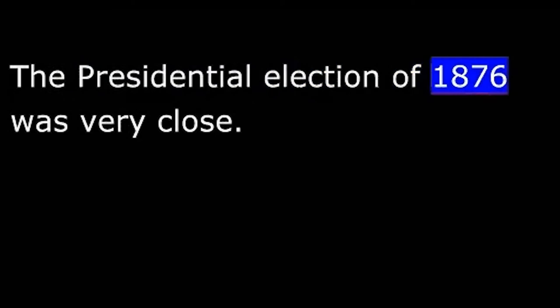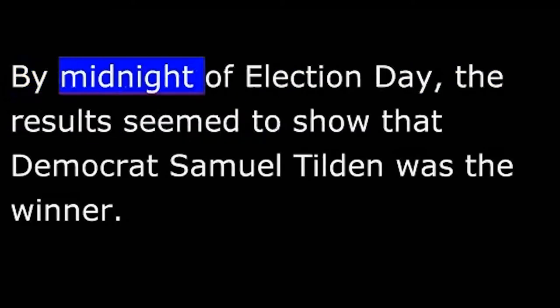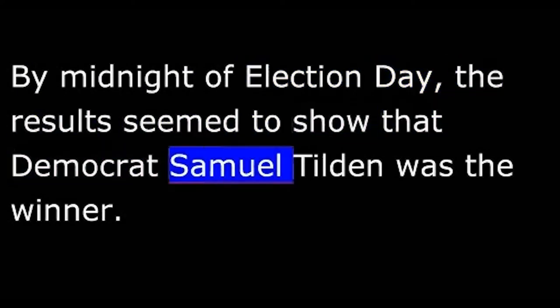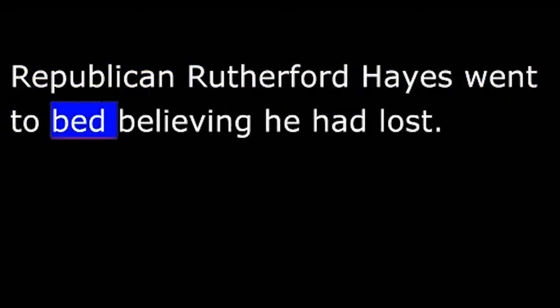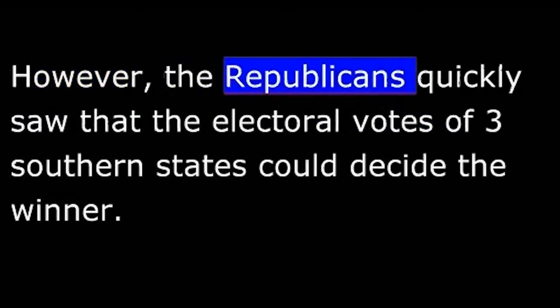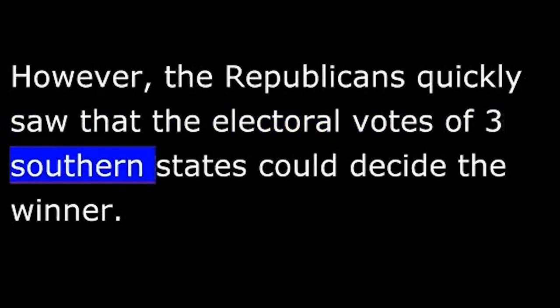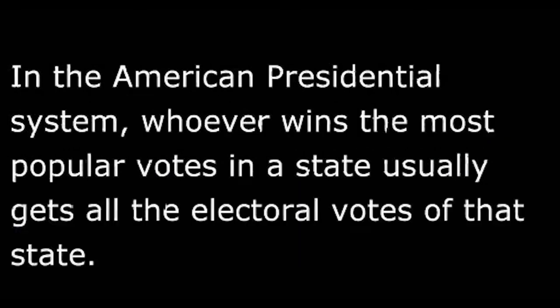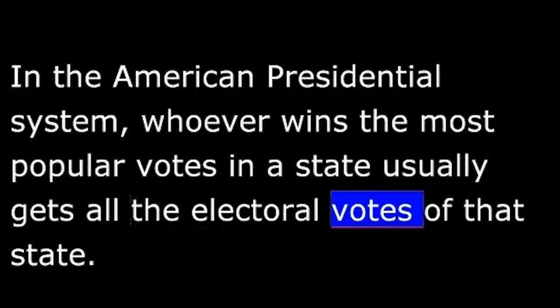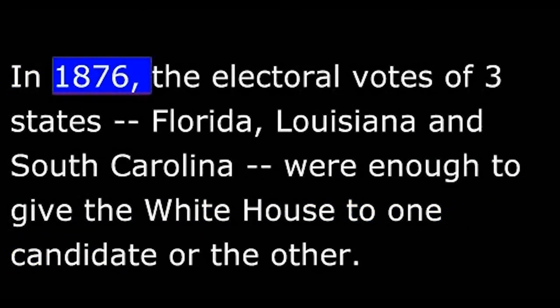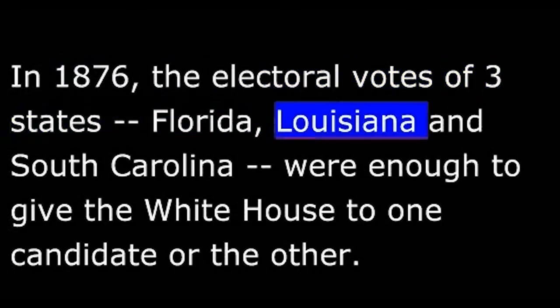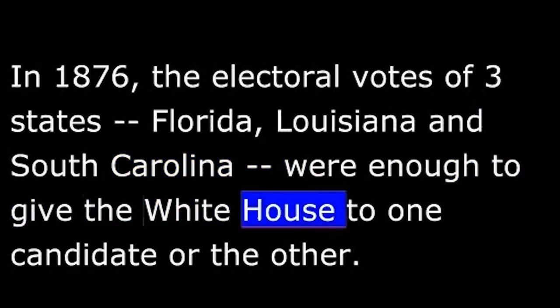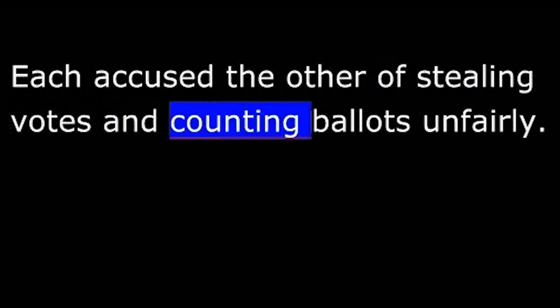The presidential election of 1876 was very close. By midnight of Election Day, the results seemed to show that Democrat Samuel Tilden was the winner. Republican Rutherford Hayes went to bed believing he had lost. However, the Republicans quickly saw that the electoral votes of three southern states could decide the winner. In the American presidential system, whoever wins the most popular votes in a state usually gets all the electoral votes of that state. In 1876, the electoral votes of three states — Florida, Louisiana, and South Carolina — were enough to give the White House to one candidate or the other. Each party claimed victory in these three states. Each accused the other of stealing votes and counting ballots unfairly.